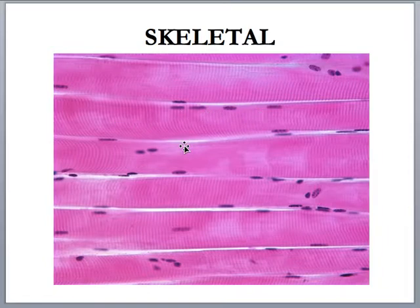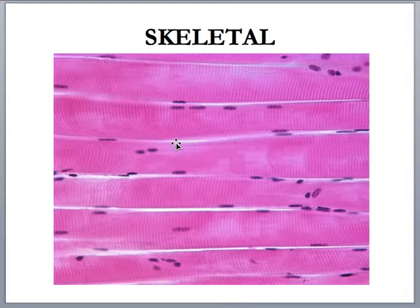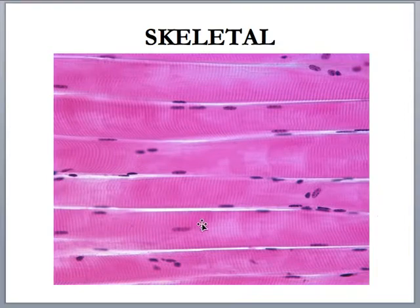Skeletal muscle tissue is found in skeletal muscle organs — these are organs attached to the skeleton. When they contract, they move the skeleton throughout the environment. This is under voluntary control. We decide when we want to talk, so our tongue is made up of skeletal muscle. When we want to walk, run, or move our hands, that's all skeletal muscle — all voluntary control.